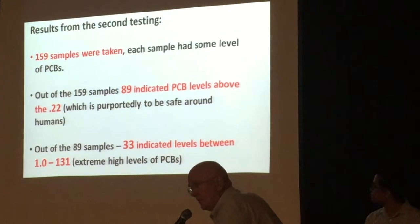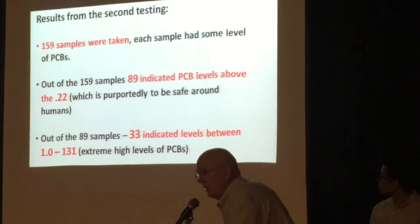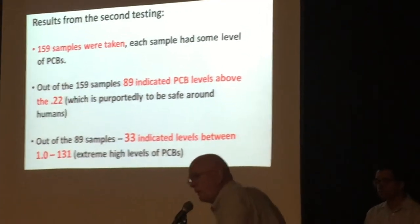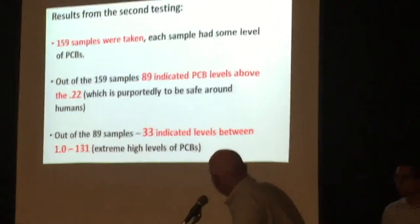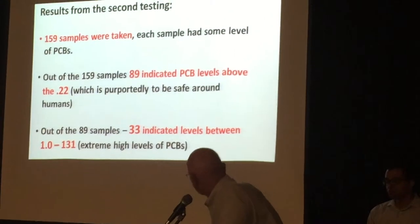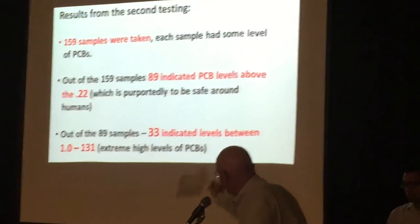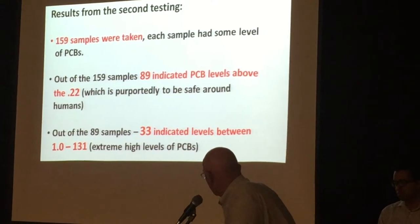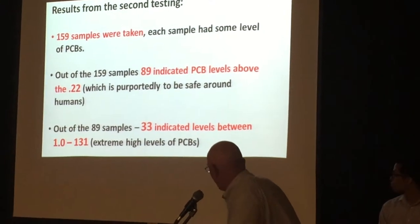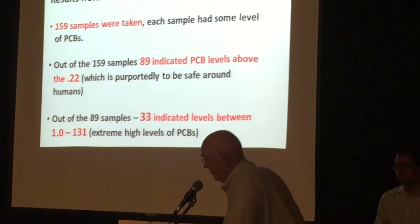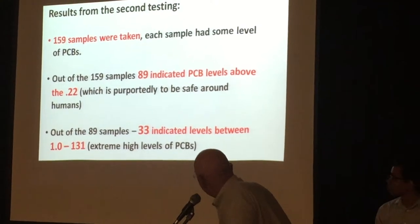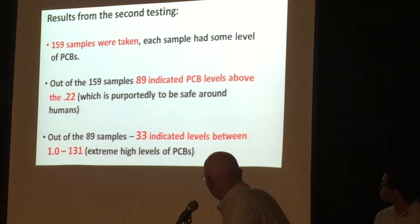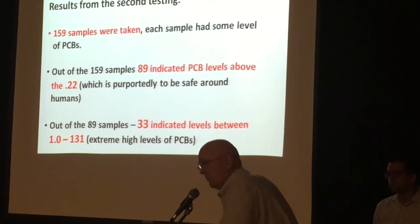The newspaper the other day said it was anything under one, but the agreed to cleanup at this site was 0.22. So 159 samples taken, each sample had some level of PCBs. Out of the 159 samples, 89 indicate PCB levels above the 0.22, which is safe for humans according to the state and the federal government. Out of the 89 samples, 33 indicated levels between 1.0 to 131, which is extremely high levels of PCBs.